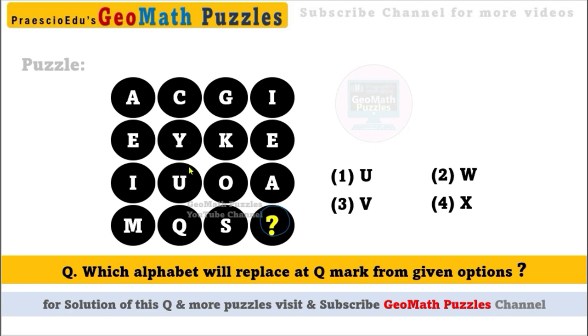We have to find out which alphabet will replace the question mark from the given options. Options 1, 2, 3, and 4 are U, W, V, and X respectively.